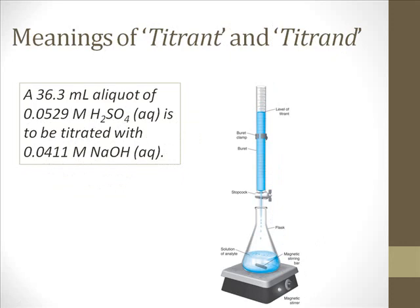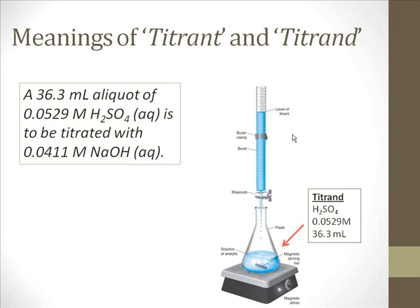The first thing we're going to do is understand the meanings of the words titrant and titrand. In this volumetric analysis, we have two solutions. Each solution contains a chemical, and the chemical in the first solution is going to react with the chemical in the second solution. Titrand is the solution for which we have a known volume — that's the sulfuric acid solution — and it goes in the flask. That titrand solution is going to react with the titrant solution.